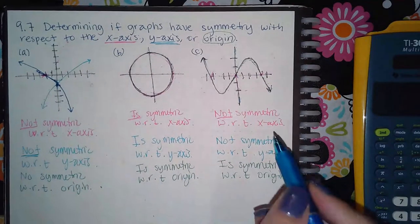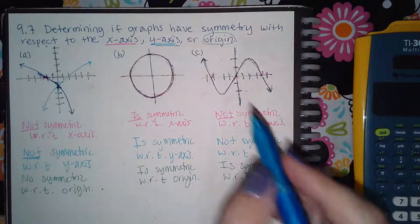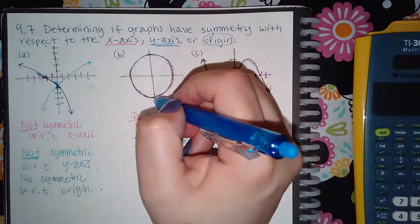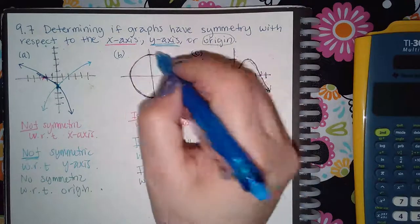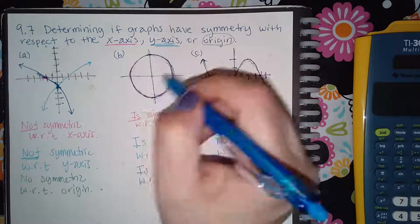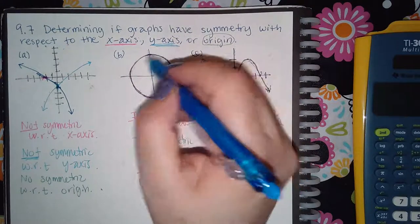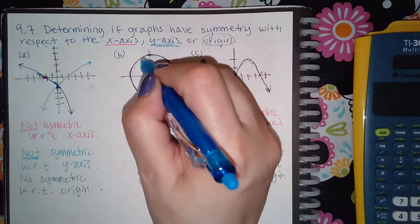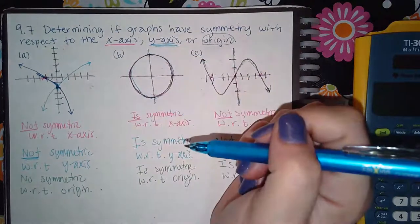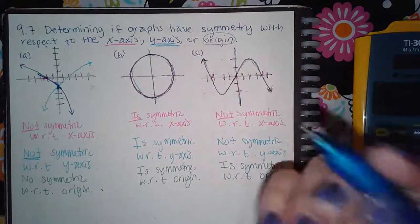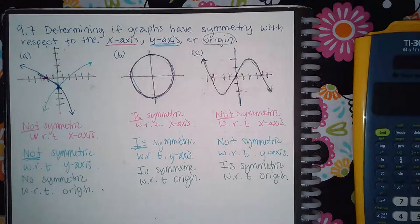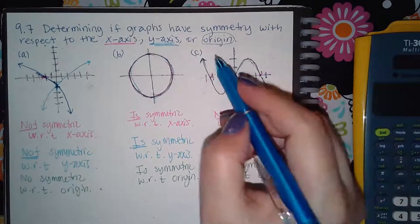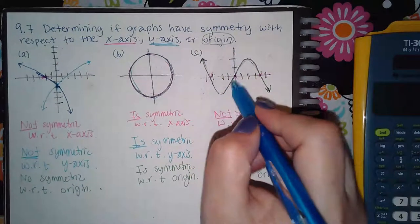For graph B: I imagine the y-axis cutting the graph, take the left side and reflect it over — it lands here — and take what was on the right-hand side and reflect it over — it lands there. Does it land on itself? Yes it does, so this one is symmetric with respect to the y-axis.